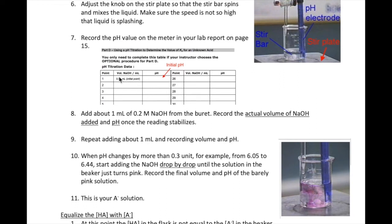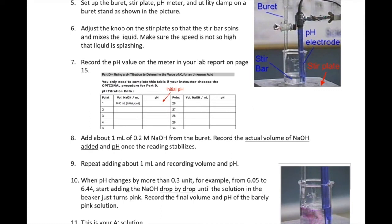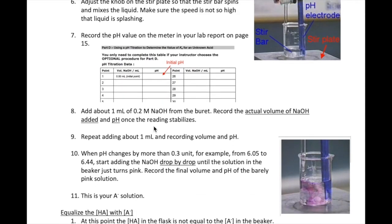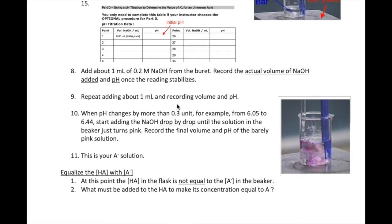Record the initial volume of your 0.2 molar NaOH — it's written as 0 milliliters, but you should write what you actually see on your burette, so you can cross that out and replace it. Then record the initial pH you observe from the pH meter for the solution. Open the stopcock for the burette and let about 1 milliliter of NaOH into the beaker. When the pH meter stabilizes, record the pH value and the actual volume of NaOH that you just added. Repeat these steps until you see a pH change of 0.3 units or more — for example, your pH jumps from 6.05 to 6.44 after the last 1 milliliter addition. That is the sign to slow down the addition of your NaOH.